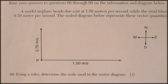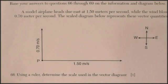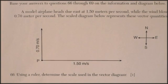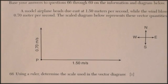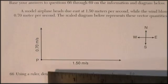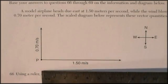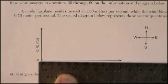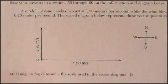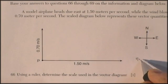So anyway, the scale diagram represents these vector quantities. Using a ruler, determine the scale used in the vector diagram. Okay. All right, so let's see what this says. I've got 1.5 meters per second and my scale is indicating 7 centimeters.